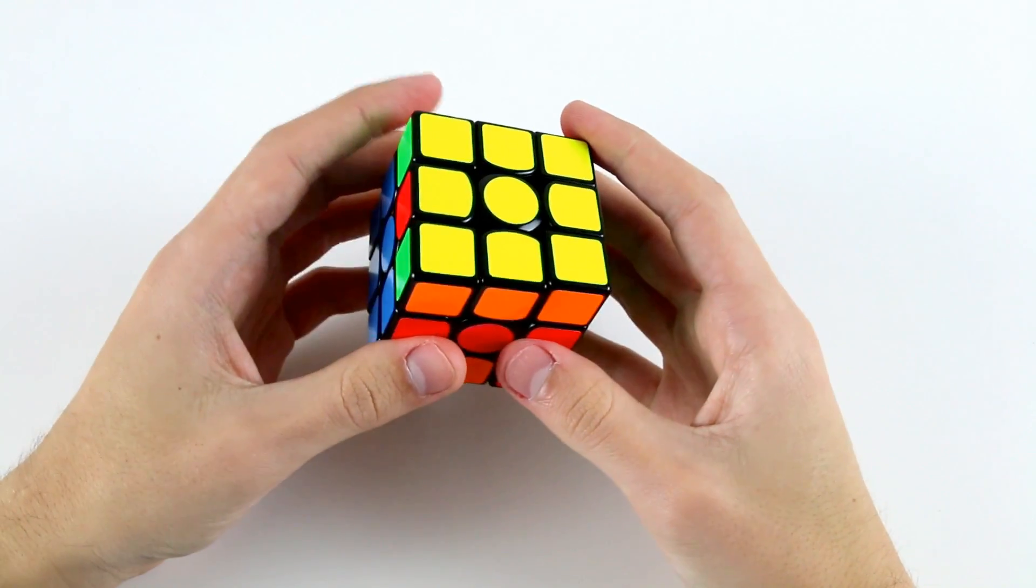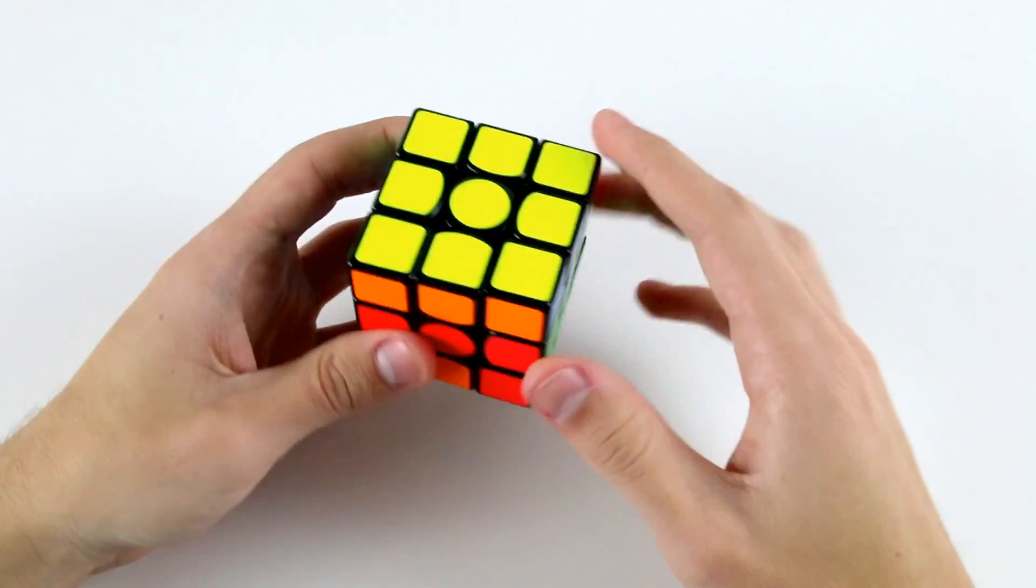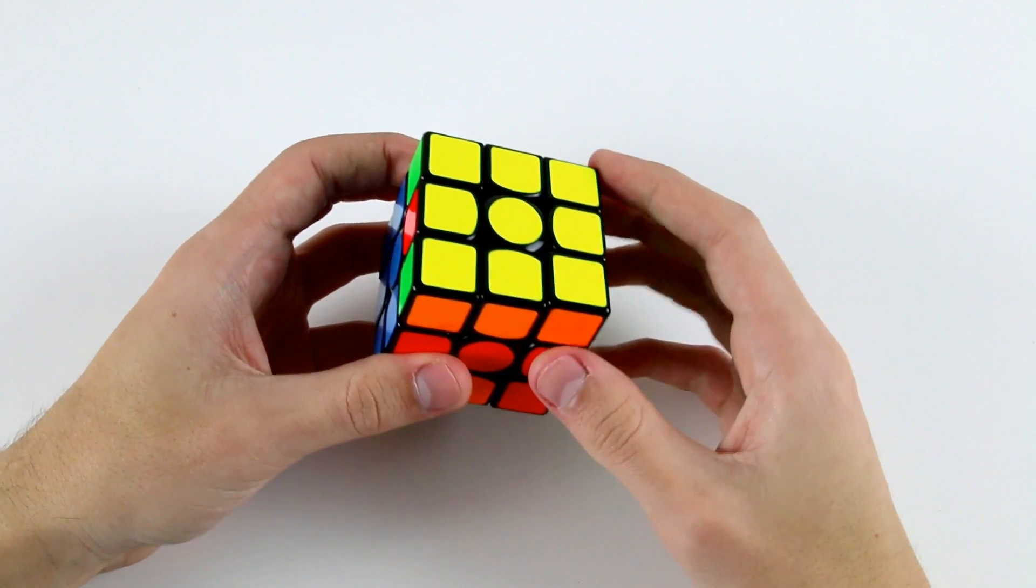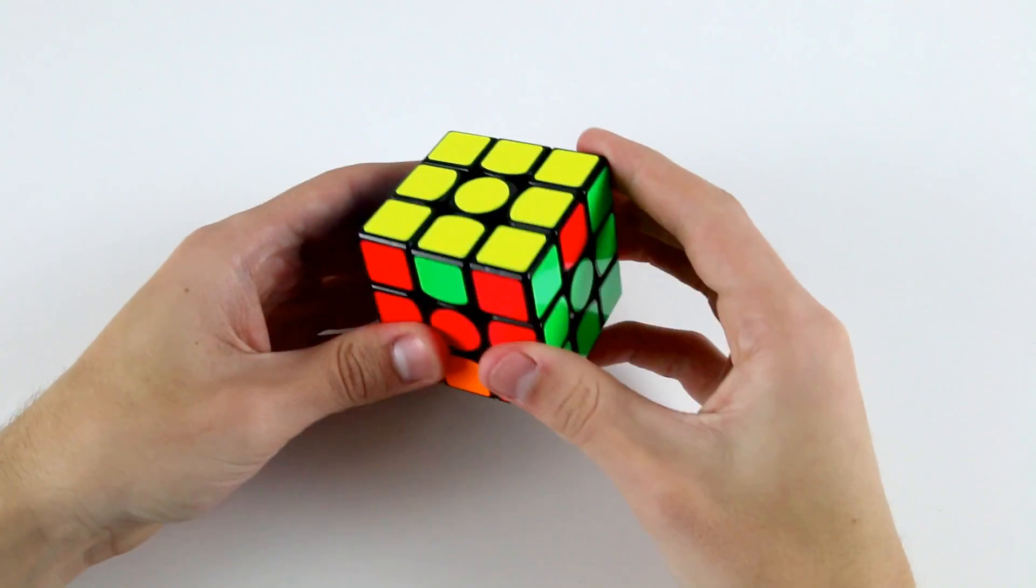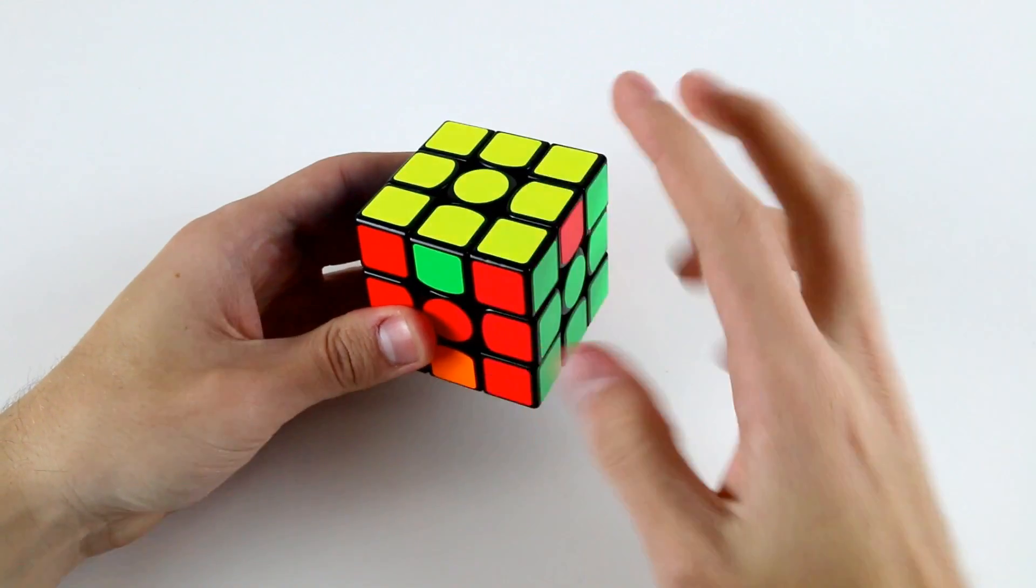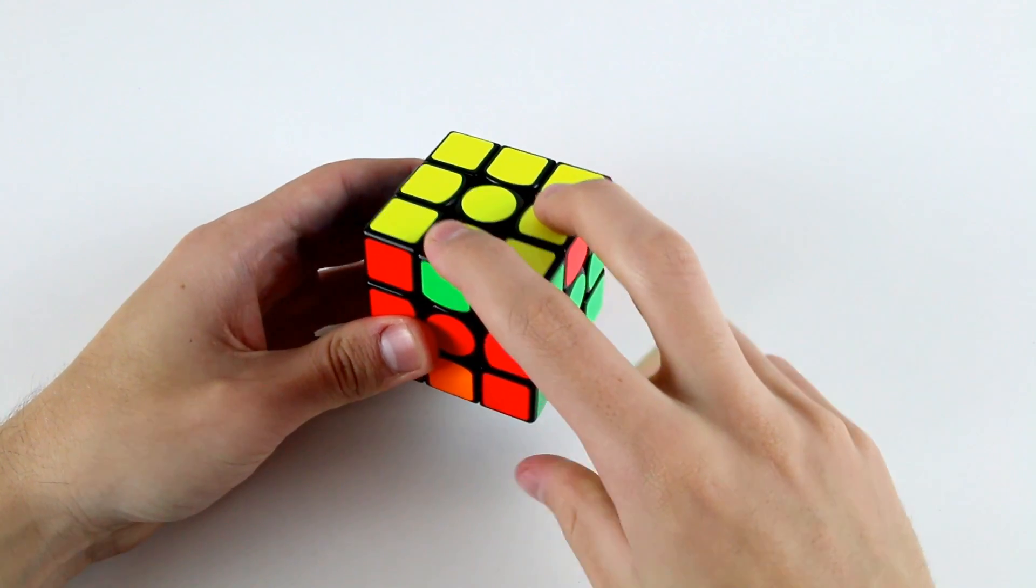It's a little bit like 4x4 PLL parity in that in some cases you'll be able to force yourself a slightly better PLL. And even for something like this, this is a really easy case where we have an adjacent edge swap on top.